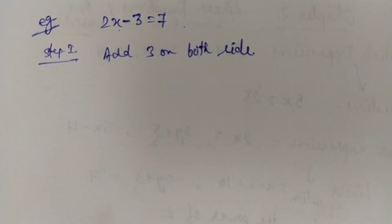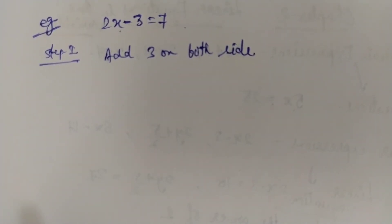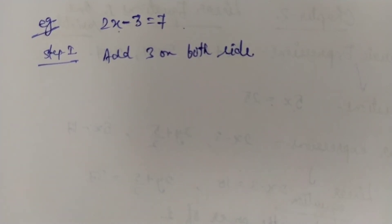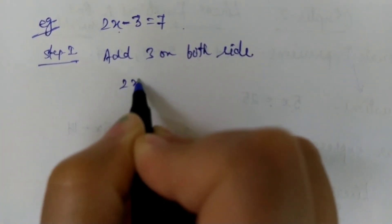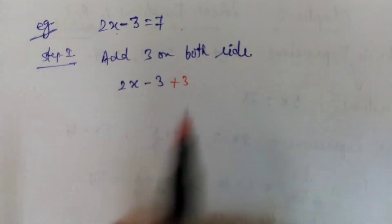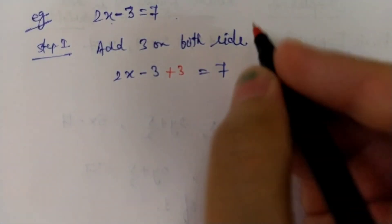This is just like a weighing balance — the equipment that a shopkeeper or vegetable dealer uses. To keep it balanced, if they put 2 kg weight on one side, they must put 2 kg of potatoes on the other side — only then will it remain balanced. Likewise, for our equation 2x minus 3 equals 7, we add 3 on both sides: 2x minus 3 plus 3 on the left, and 7 plus 3 on the right.